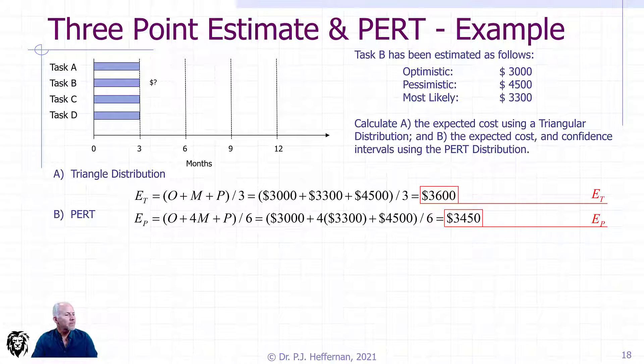For PERT, it's that weighted average. We have the coefficient of four before the mean. So we have our optimistic plus four times our most likely plus our pessimistic. And now we have to divide by six because we have the four before the most likely. And we come up with a slightly different answer as our best estimate for the task of $3,450.